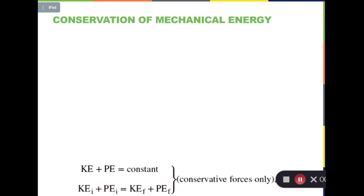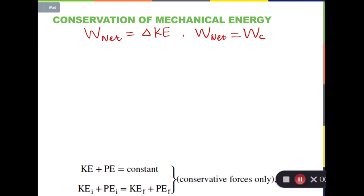Assuming only conservative forces are involved in a system, then the total work done by all forces will be Wc. Based on the work-kinetic energy theorem, it is equal to the change in kinetic energy of the system. W_net equals change in kinetic energy. And W_net equals Wc because all forces here are conservative. Also, Wc is always equal to the negative change in potential energy.